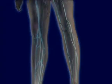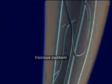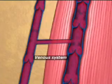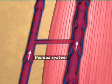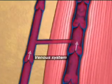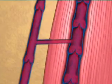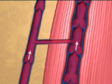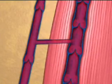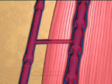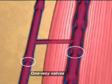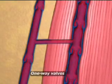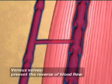Let's now travel into the venous system as we have never seen it before. The role of the venous system is to return the deoxygenated blood from the lower extremities to the heart. To counterbalance the effect of gravity, the veins of the legs are equipped with a series of one-way valves that prevent the return of blood flow toward the feet.